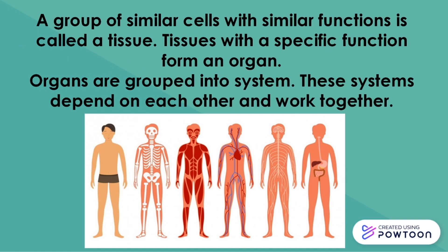A group of similar cells with similar functions is called a tissue. Tissues with a specific function form an organ. Organs are grouped into systems. These systems depend on each other and work together.